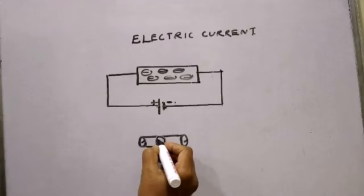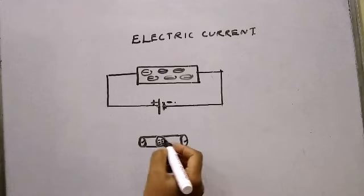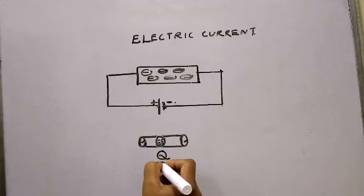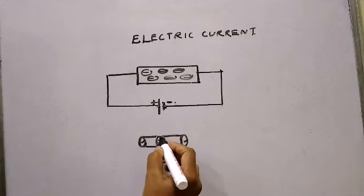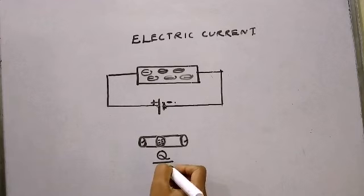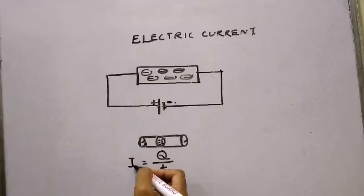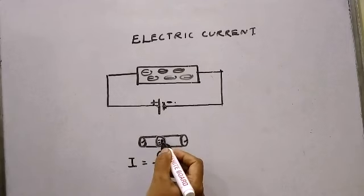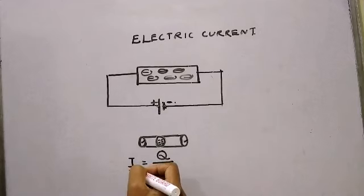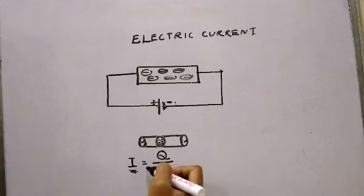I have to consider how many charges are flowing through this cross-sectional area of a conductor per unit time — that is, how many charges Q are flowing through a cross-sectional area of a conductor divided by unit time, that is in one second. So, the amount of charges flowing through the cross-sectional area of a conductor in one second is equal to the electric current, which is denoted by capital I. The amount of charges flowing through a cross-sectional area of a conductor in per unit time is called electric current.